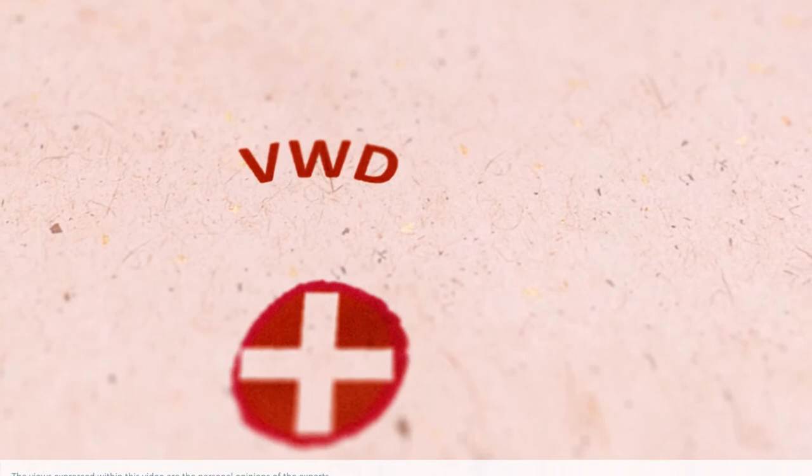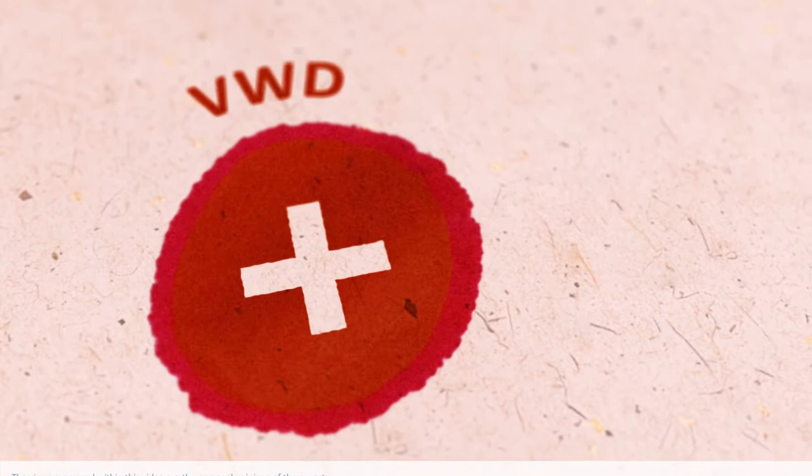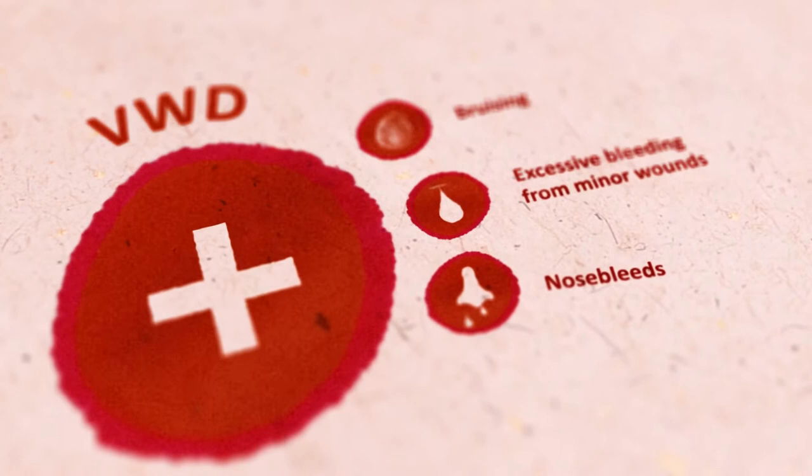Von Willebrand disease is the most common inherited bleeding disorder, causing a variety of bleeding symptoms including easy bruising, excessive bleeding from minor wounds, regular nosebleeds, and heavy menstrual bleeding.